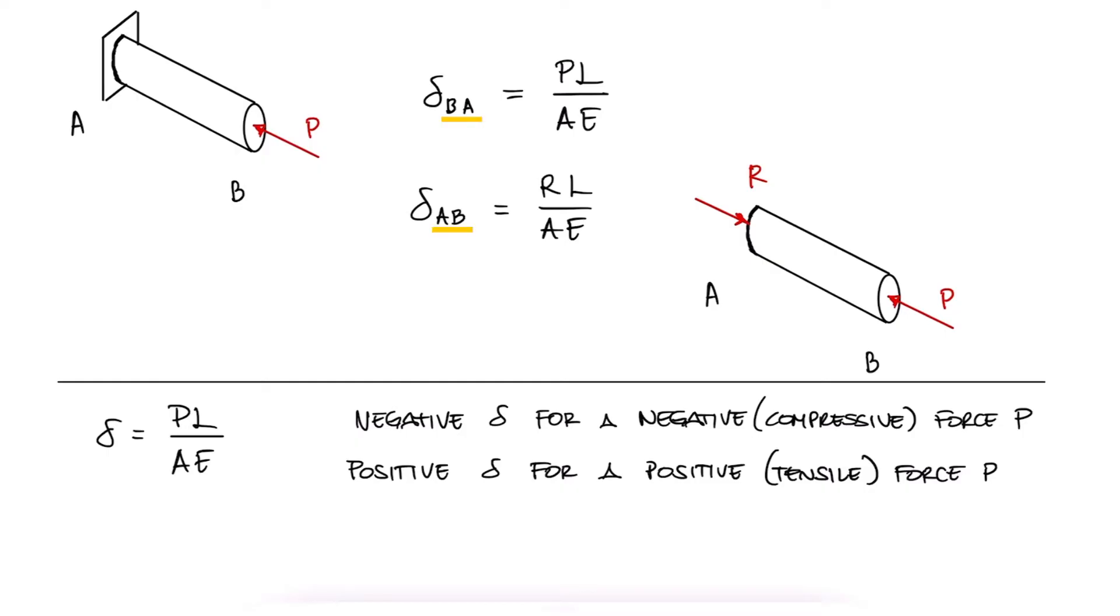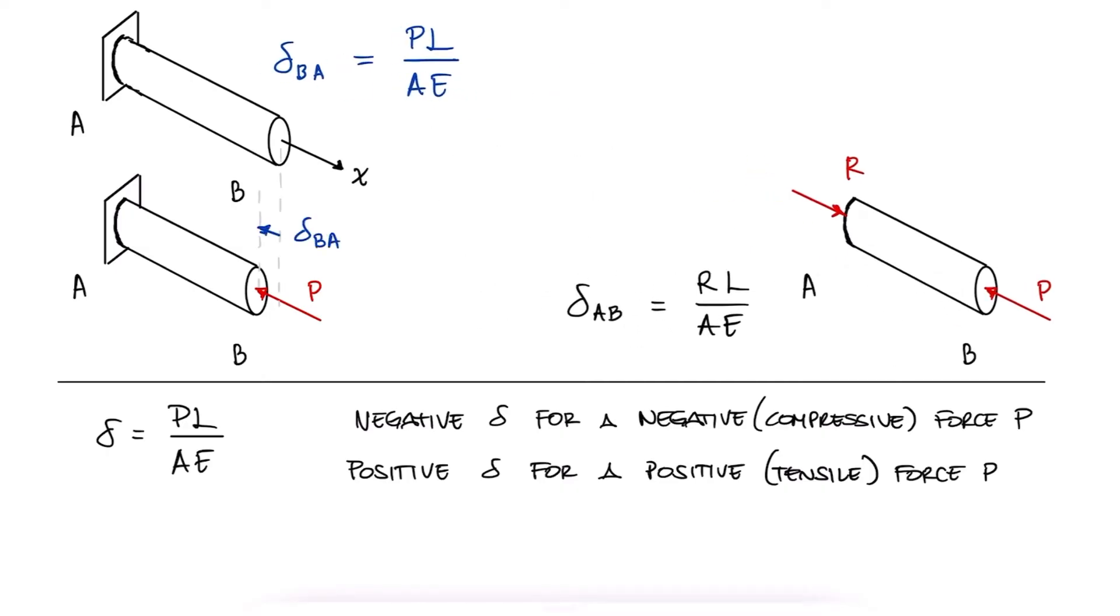On the other hand, the displacement of one point with respect to the other will follow the direction of the force affecting the point. So, for example, the free end will be moving towards the wall, the left, or the negative x-direction. Since the force F_BA is already negative, that is the force from B to A which is in the negative x-axis direction, delta BA will be negative as well, just like force BA.